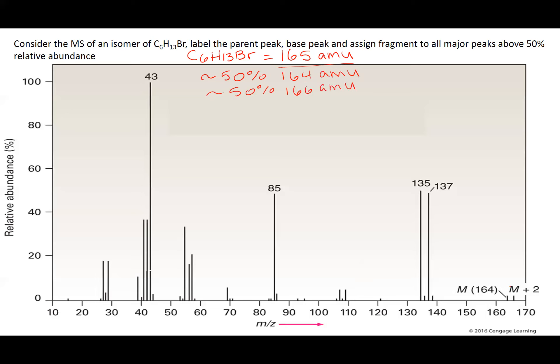So if I look here, these are my parent peaks, and we get a characteristic M and M plus 2 pattern. That's characteristic to organohalides. So any fragment that has bromine will also show an M and M plus 2 pattern. Right? So it's a peak with a mass and then a peak that's two Daltons higher that's almost the same relative abundance. They're not exactly the same, but they're about 50-50.